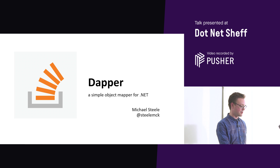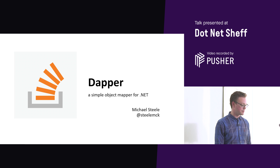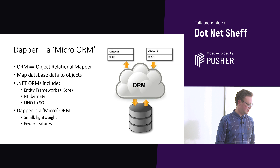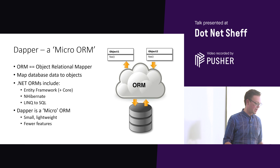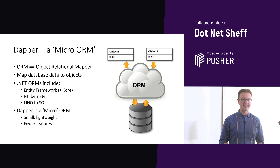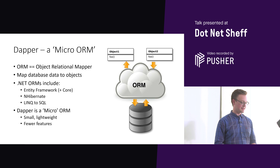This is on Dapper, which is a simple object-relational mapper for .NET. An object-relational mapper, or ORM, maps data in a database to objects in code.